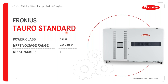We also have the Fronius Taro Standard, which is a 50 kilowatt inverter. This inverter has a slightly wider MPPT voltage range, ranging from 400 to 870 volts DC. You've got three MPPT trackers in the standard. So if you are planning systems where you have PV panels facing in different directions, my recommendation is to go for an inverter such as the Taro Standard with three trackers, giving you more flexibility with regards to different orientations of your PV modules.